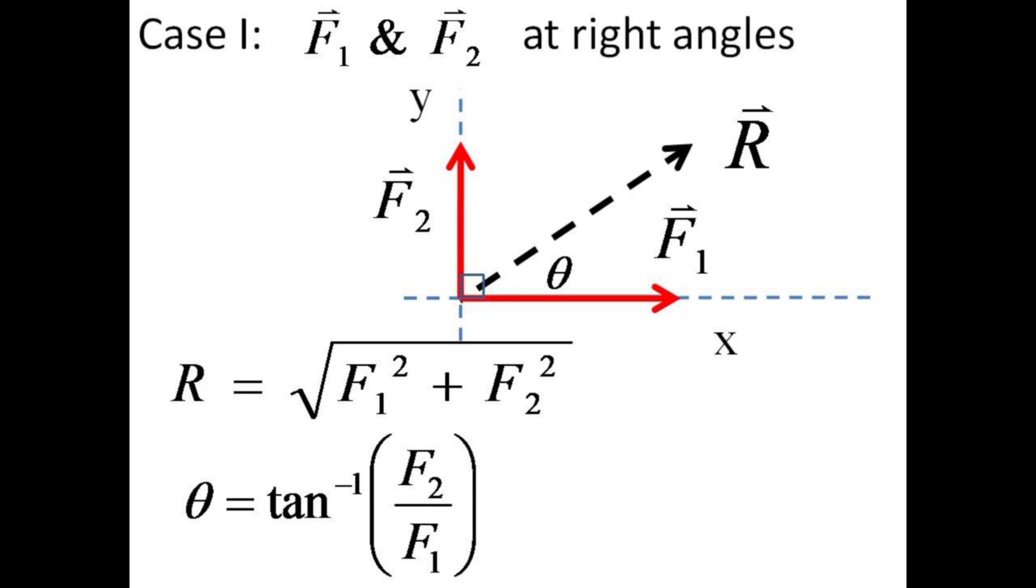The resultant vector sum of these two, R, which exists only in our imagination, has a magnitude given by the Pythagorean theorem as the square root of F1 squared plus F2 squared, and will be directed along an angle theta given by the inverse tangent of F2 divided by F1.